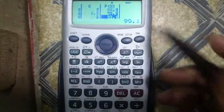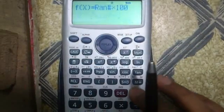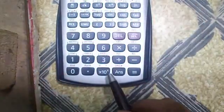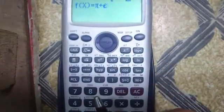You can also use scientific constants. Press shift and this button for pi, and alpha and this button to get Euler number or e.